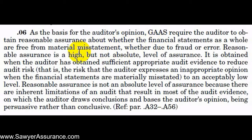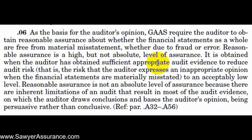Once the auditor understands the risks of material misstatement at both the assertion and financial statement levels, he needs to design and perform procedures with the goal of obtaining sufficient appropriate audit evidence to reduce that risk to an acceptably low level. Audit evidence is information obtained by the auditor from the entity or outside third parties that assists in substantiating the assertions, balances, and disclosures in the financial statements — such as accounting records, management representations, source documents, and confirmations from outside parties.